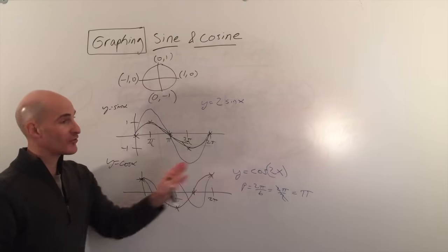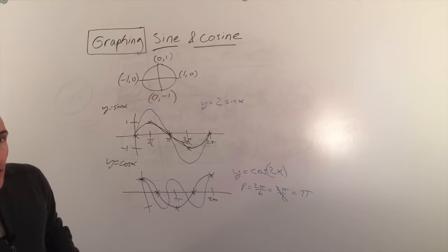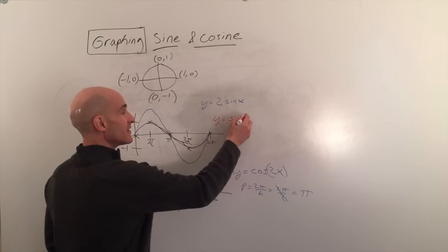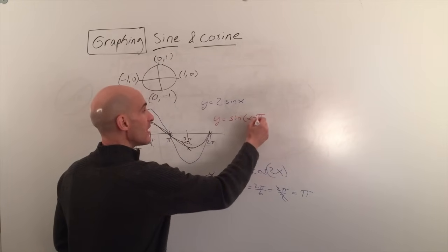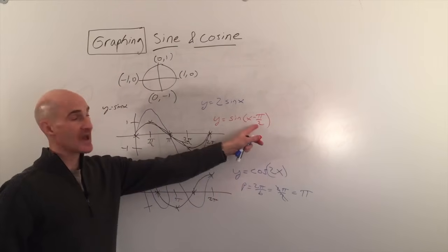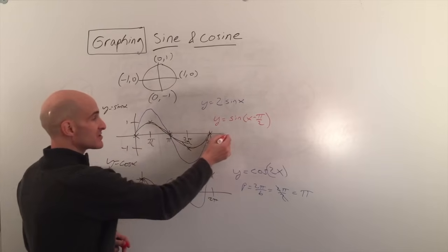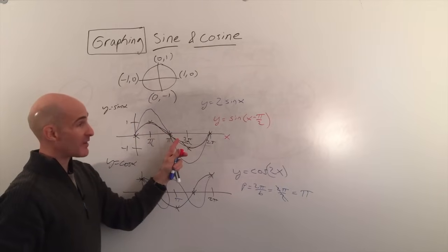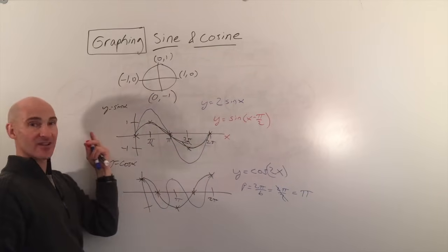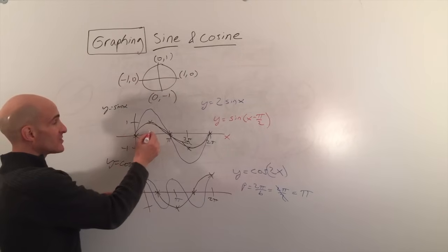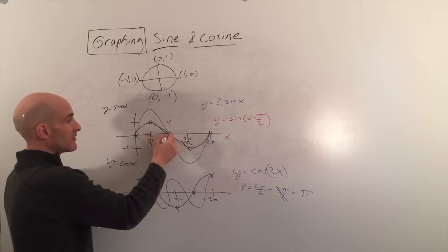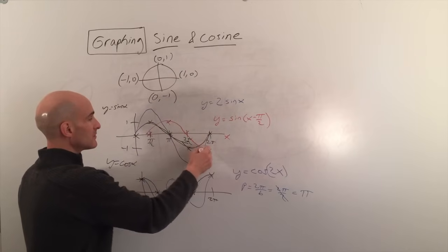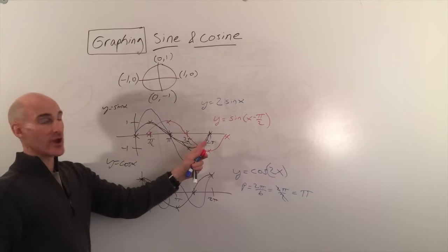The next thing is shifting the graph left and right. If we graph y equals sine of (x minus π/2), the number grouped with the x shifts the graph in the x-direction. Minus π/2 is going to shift it positive π/2 to the right. If this were plus π/2, it would shift to the left π/2. So each of these points shifts to the right, and you can see the graph shifting to the right π/2.